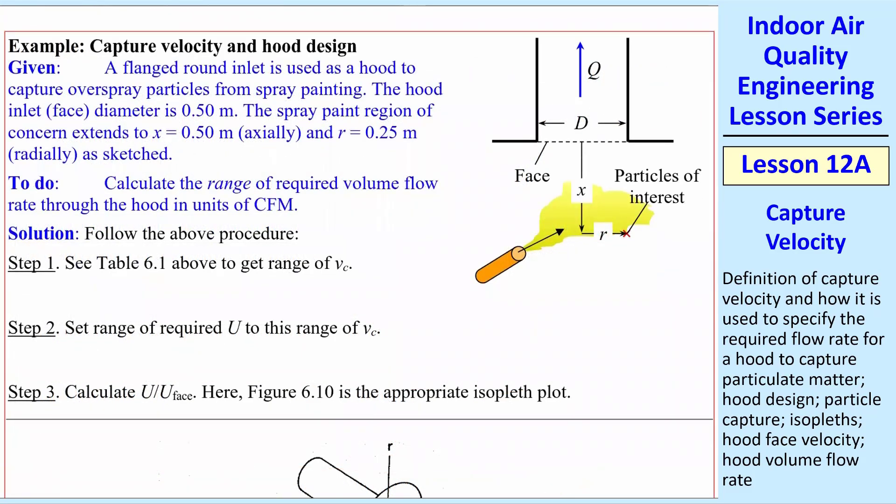It's best learned by example. So let's do an example that is pretty typical, where you have, in this case, a flanged round inlet. We're using it to capture overspray particles from spray painting. The hood inlet face is grounded. It has a flange. And we're looking at particles of concern at this point, this red X, which is given by an X and an R value. We want to calculate the range of required volume flow rate through the hood in units of CFM. I'm going to follow the above procedure.